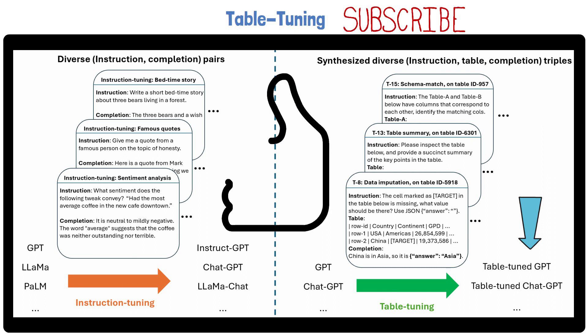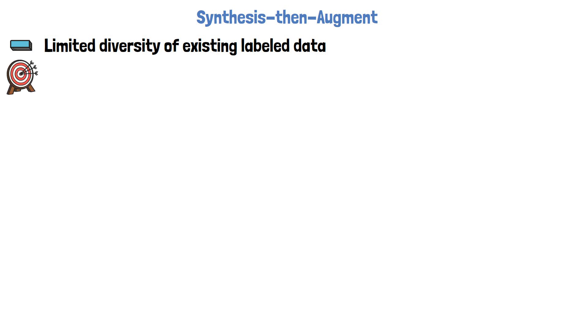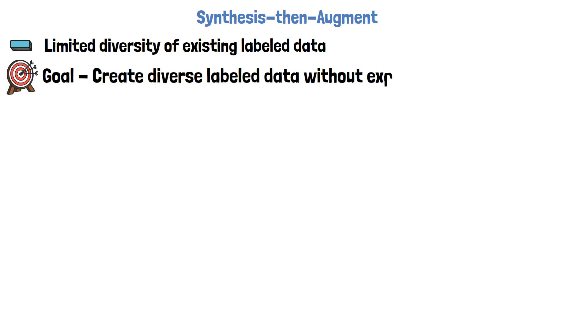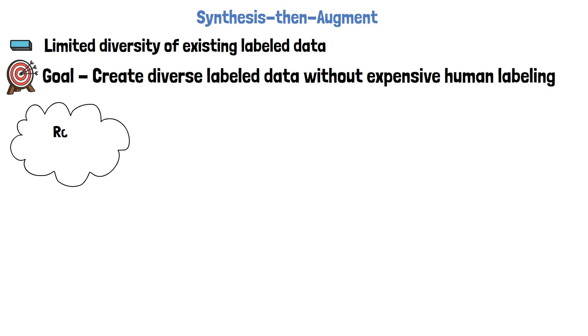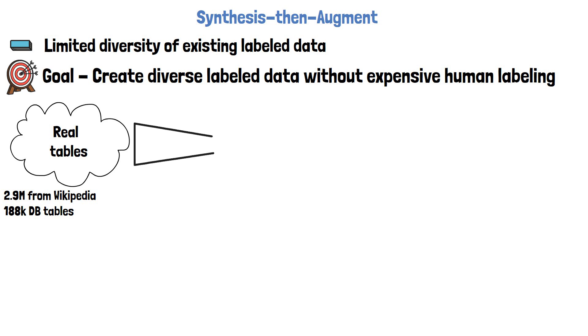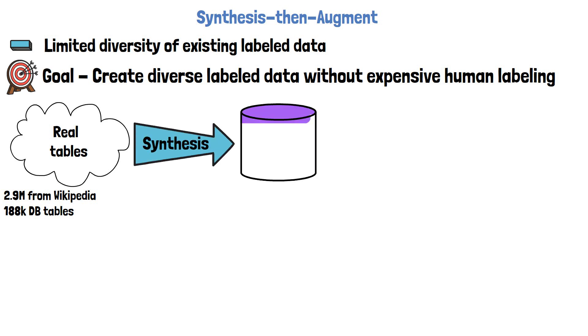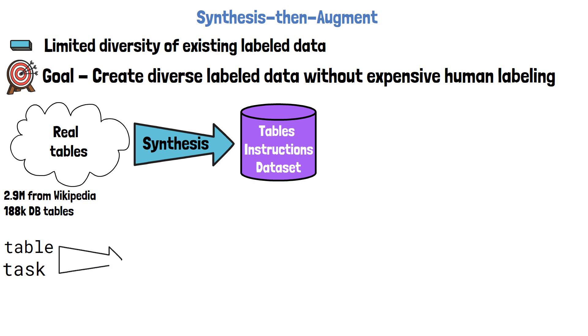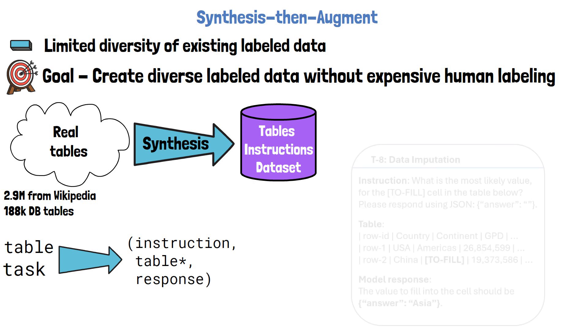Let's dive deeper into how the dataset for table tuning was created. The researchers refer to their method as 'synthesize then augment.' There is limited diversity in existing labeled data, so the goal is to create a large, diverse labeled dataset without expensive human labeling. They start with a large set of real tables — 2.9 million tables from Wikipedia and 188k database tables. The first step is synthesis, where in each step they sample a real table and a task from a set of supported tasks to create a new sample of instruction, table, and response.